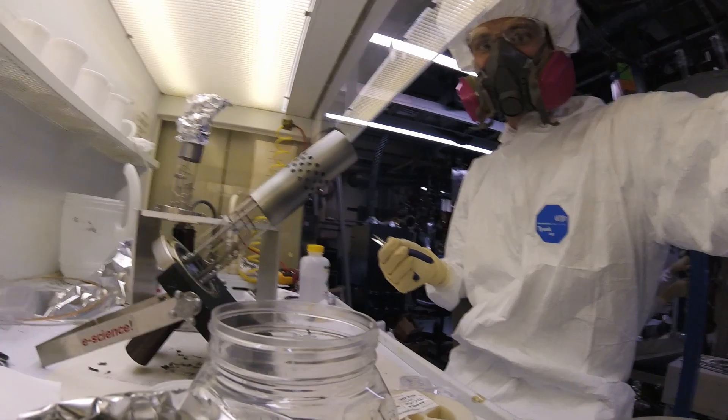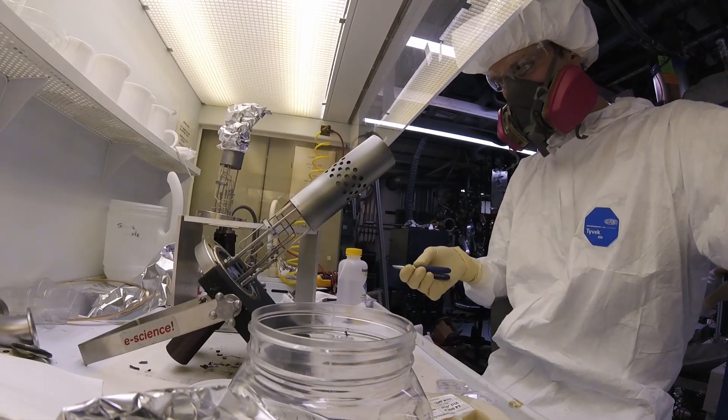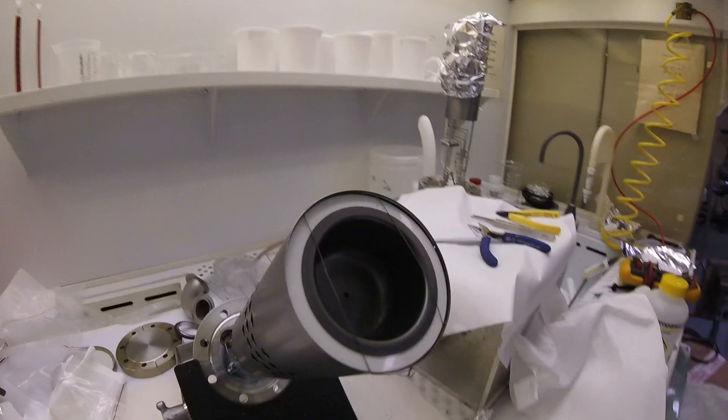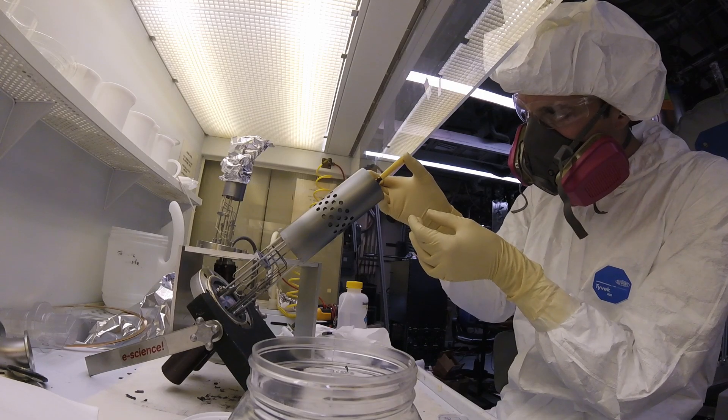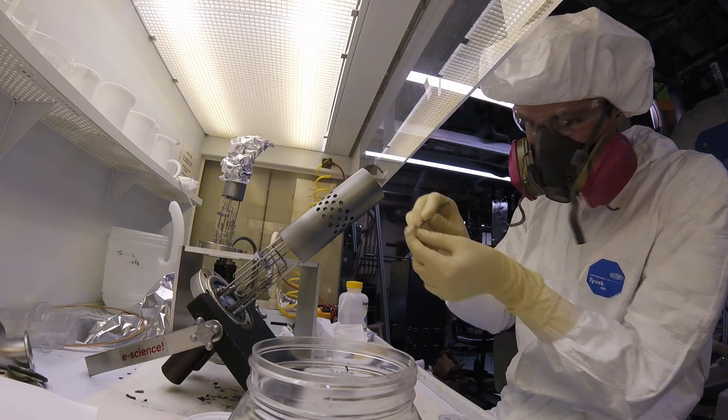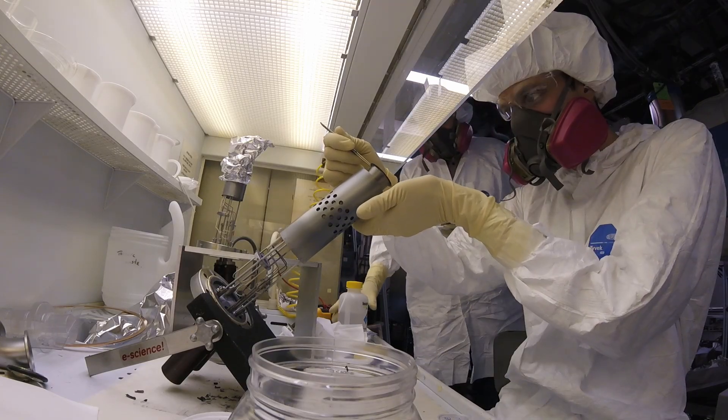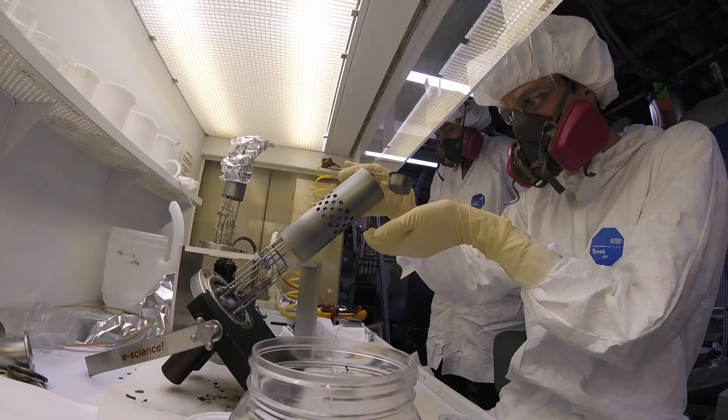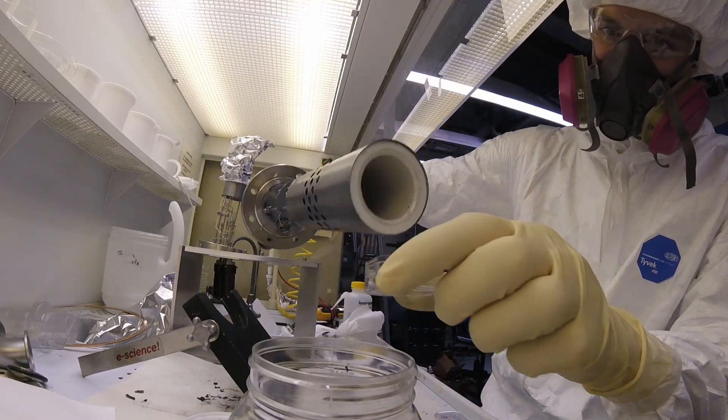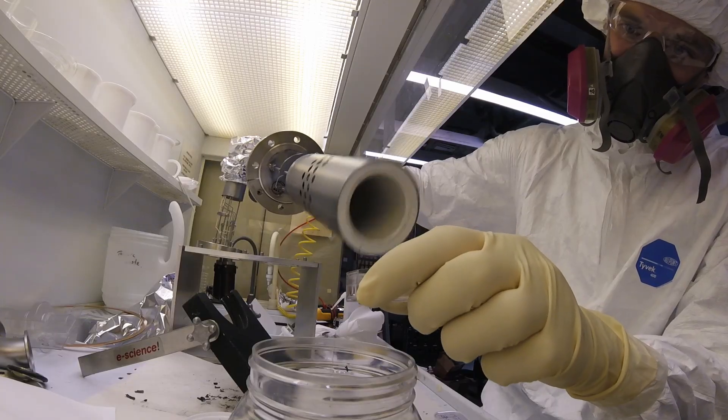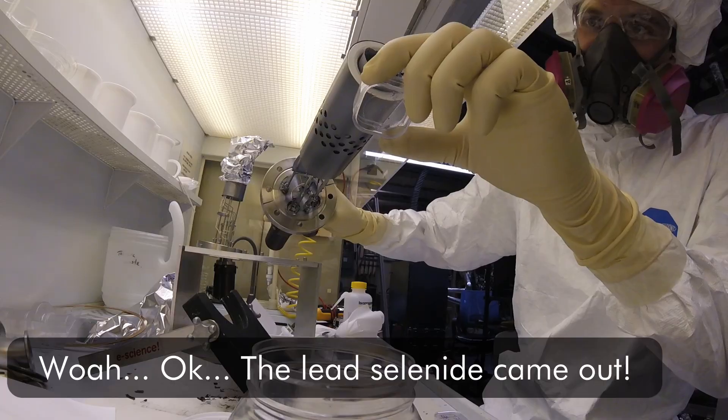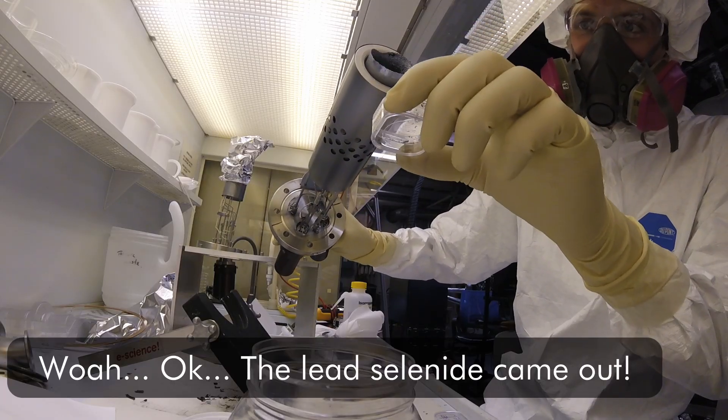This footage is from some recent service to the MBE when I was refilling the lead selenide cell. This particular cell design actually has this little front plate with a pinhole that limits the material coming out. So the first thing that I have to do is snip the tantalum wire that holds the pinhole plate in place and remove the front of the cell. There was still a little bit of material left in the cell, and here I was only trying to pour out a few flakes as a sample so that we could test them later. But it turns out that all of the lead selenide caked into the walls of the crucible actually fell out at once.